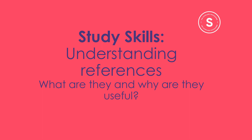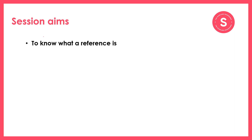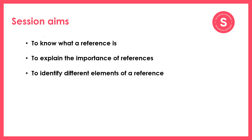There will be a STEM focus on the examples. The session is aimed at 13 to 16 year olds but may be useful for older students too, because the skill of understanding references is very important at university, and even university students struggle to understand and use them well. There are three aims of this session: first, to know what a reference is; second, to be able to explain the importance of references; and finally, to identify different elements of a reference.